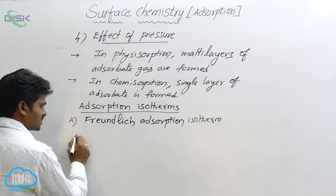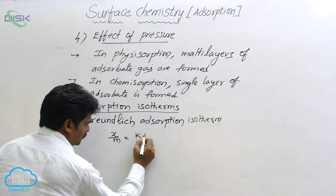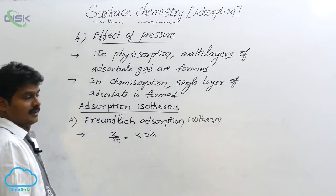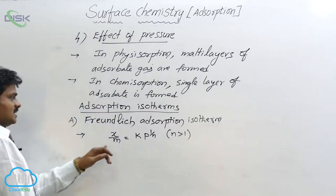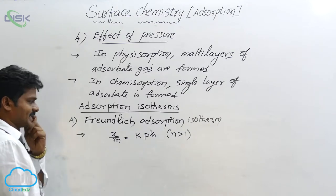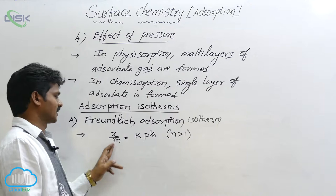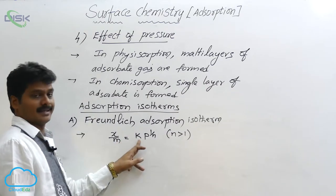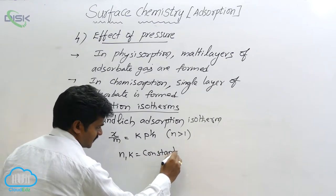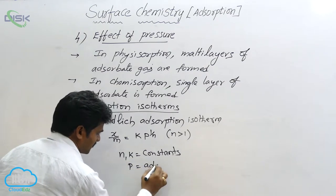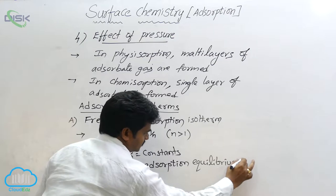The Freundlich adsorption isotherm is the first theory which explains the effect of pressure on physical adsorption. There is a mathematical relation: x/m = k × p^(1/n), where n is greater than 1. Here x is the mass of adsorbate in grams, m is the mass of adsorbent in grams, k and n are constants, and p is the adsorption equilibrium pressure.